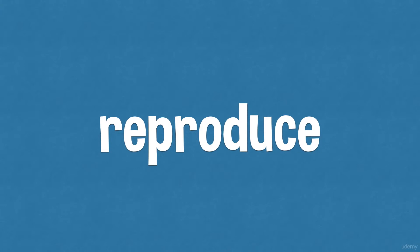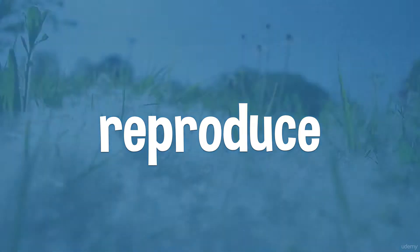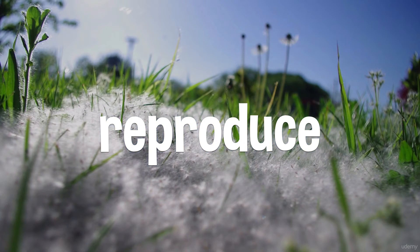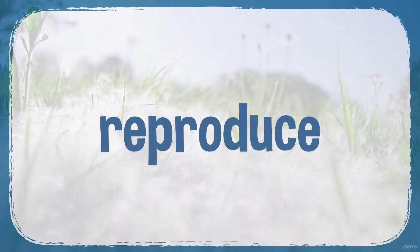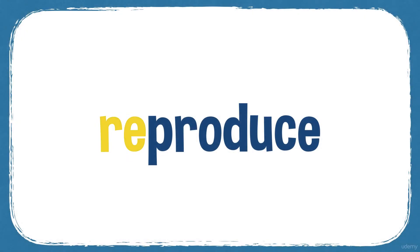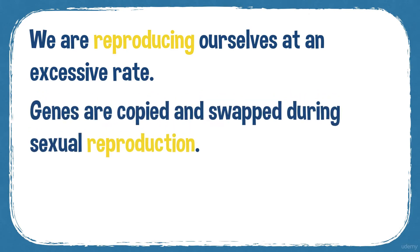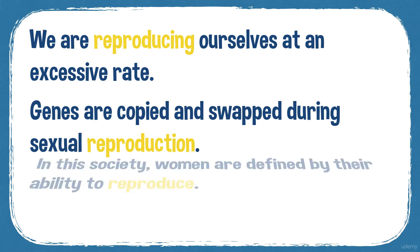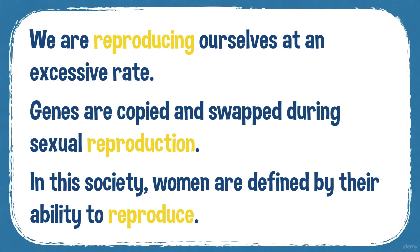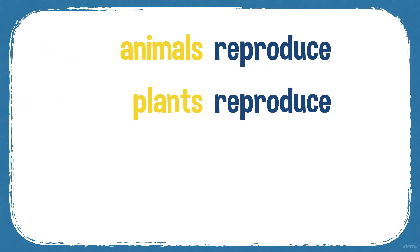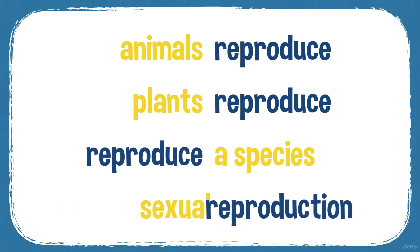The end product of fertilisation is reproduction. When something reproduces, it's produced again, and in biology it refers to the production of new animals and new plants. In this picture you can see lots of pollen from flowers, used in plant reproduction. Example sentences: we are reproducing ourselves at an excessive rate. Genes are copied and swapped during sexual reproduction. In some societies, women are defined by their ability to reproduce. Common collocations: animals and plants reproduce, reproduce a species, and sexual reproduction.